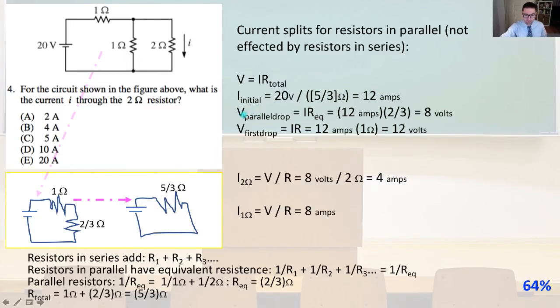So our voltage, the parallel drop of the voltage is going to be the current times the equivalent resistance. And we found that the equivalent resistance of the two resistors in parallel down here to be 2 thirds omega. So we're going to have 12 amps. That's the current times 2 thirds. That's the equivalent resistance. That equals 8 volts. And then that's the drop across the two resistors in parallel. And then for the first resistor, that drop is simply going to be equal times the current times the resistance. That was 12 amps times 1 omega equals 12 volts. That's the drop across the first one.